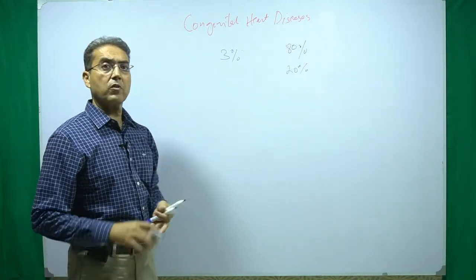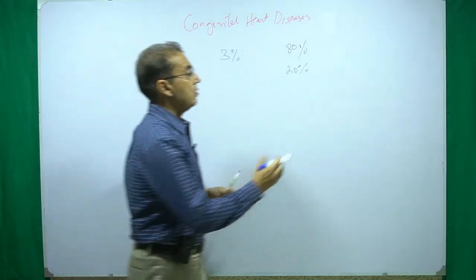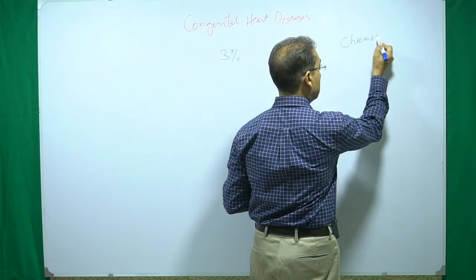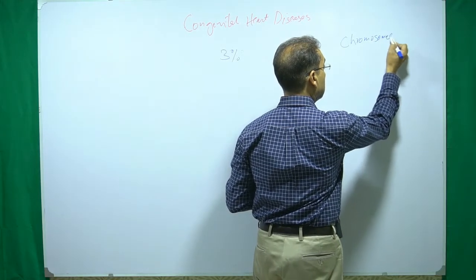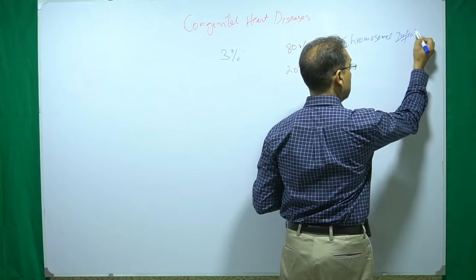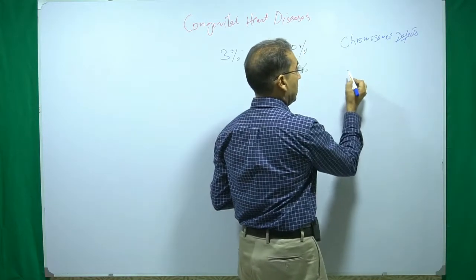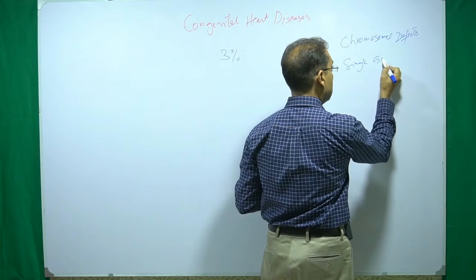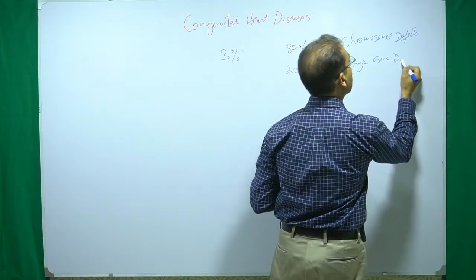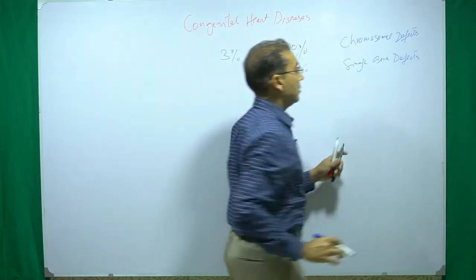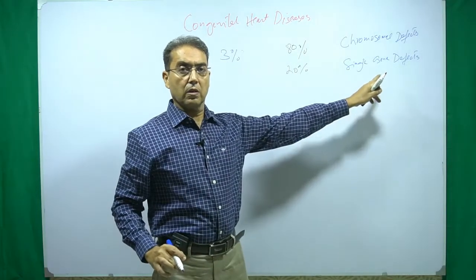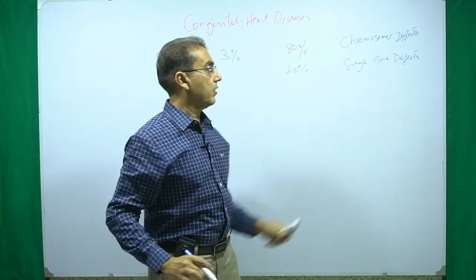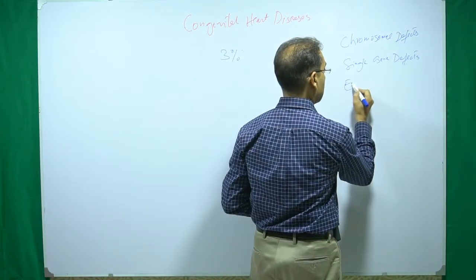What are the different causes of congenital heart disease? These are: chromosomal defects, single gene defects — which may be Mendelian or non-Mendelian type — and environmental influences.